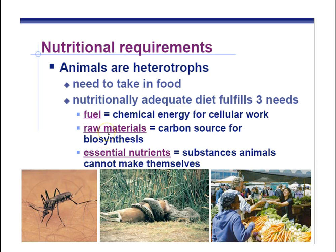We also need raw materials. You're over 100 pounds, and the matter of you came from somewhere. All the organic molecules — the carbon-based molecules in your body — had to come from somewhere, and they came from the foods you ate. And we need some essential nutrients. These are not the raw materials for building up large parts of our body, the carbon source. We're talking about things that animals need in smaller quantities in order to make some of the things they need.